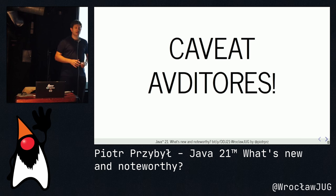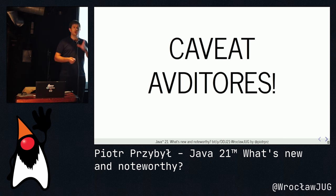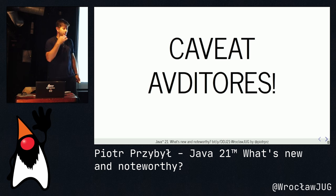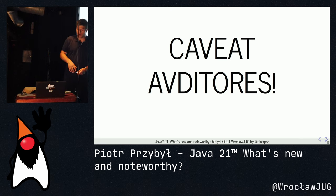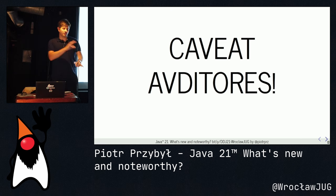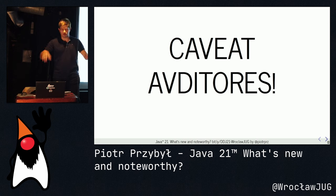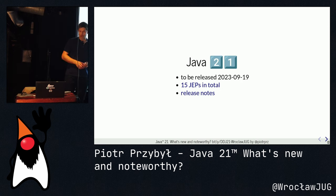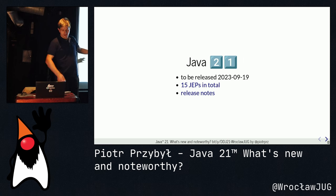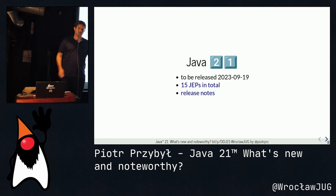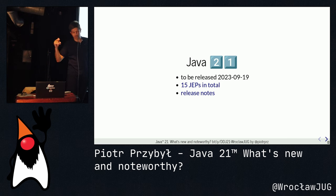A little warning: everyone can make a mistake. I'm not immune, usually because I talk fast. I've been sick recently, so I can slip different things — random words that don't fit context. Java 21 was released today. It has 15 JEPs; 16 were planned but Shenandoah didn't make it. There are release notes you can open, and the purpose of this talk is that you don't have to read them top to bottom.